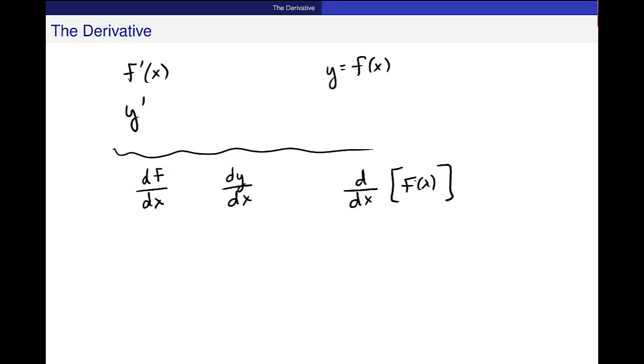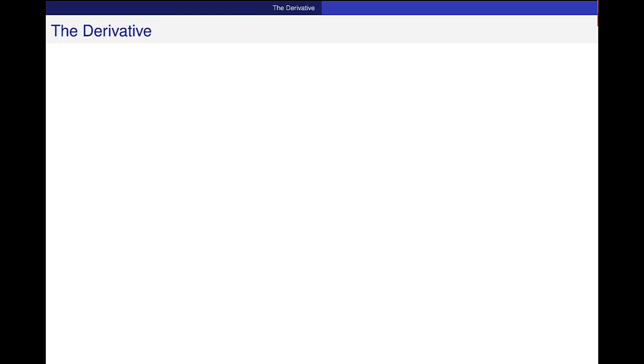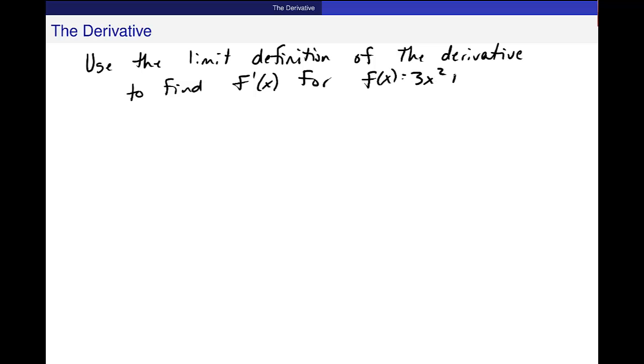So I just want to do one more example so that I'm sure that you guys are with me about using this definition. And I assume that we're there because we've been practicing. So use the limit definition of the derivative to find f prime of x for f of x is equal to 3x squared plus 5.